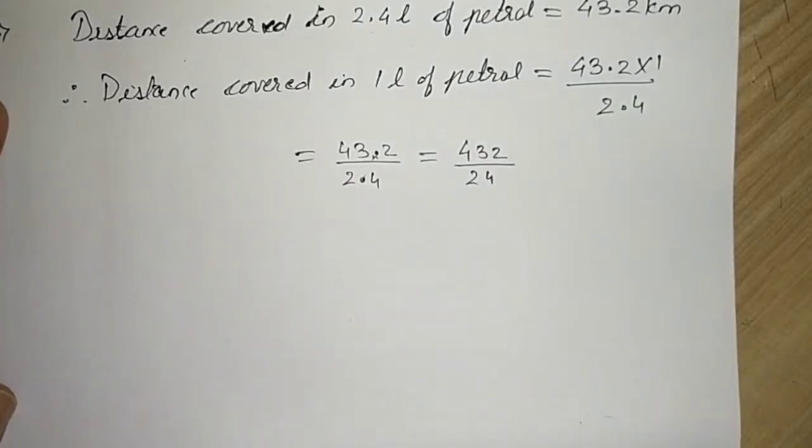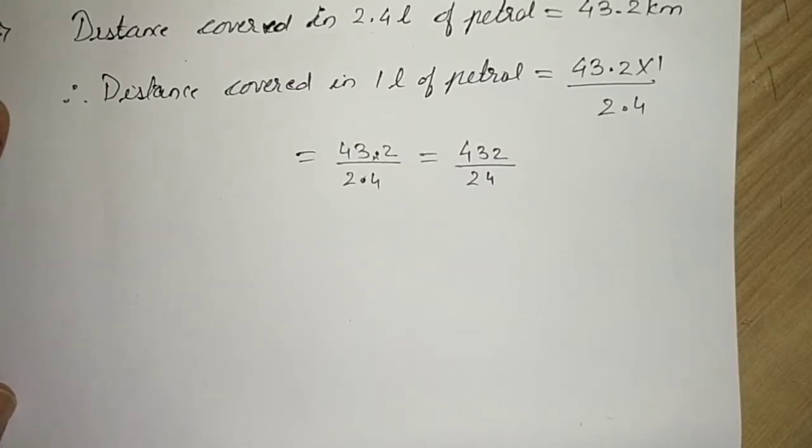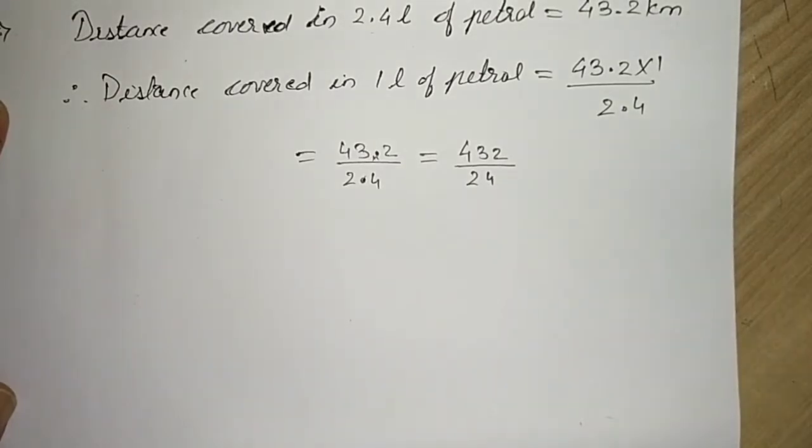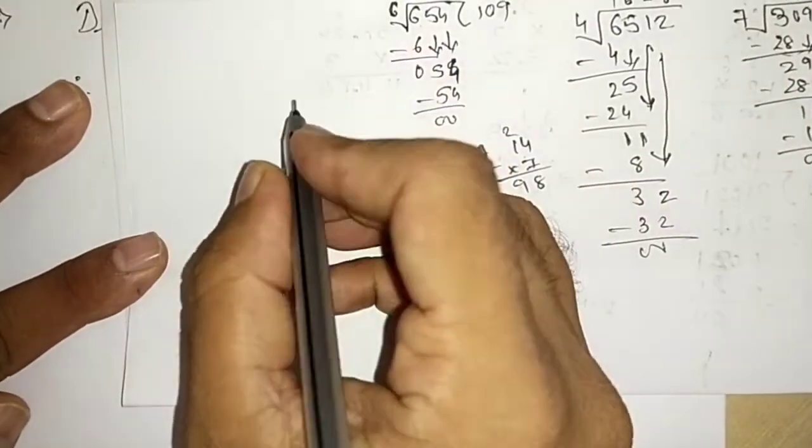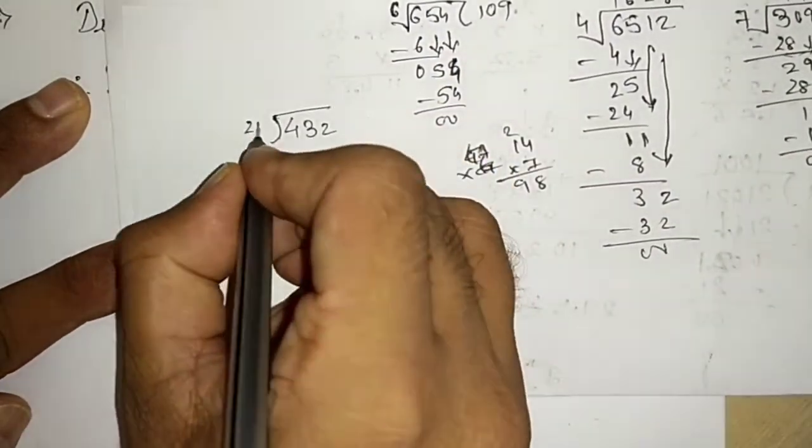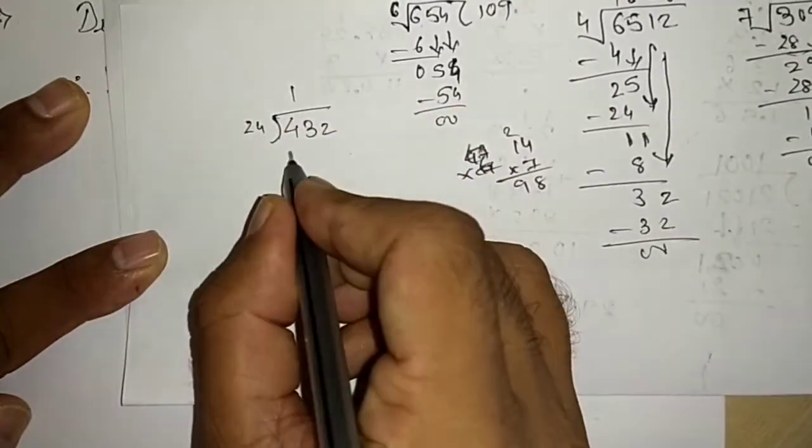That is 432 divided by 24. Now let us see if we can calculate directly. No, it will take us more time, so we will go through the long division: 432 divided by 24.